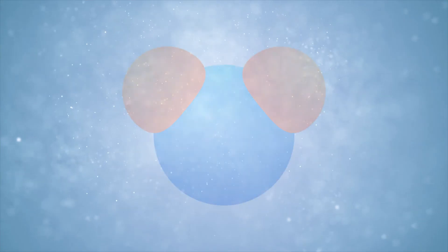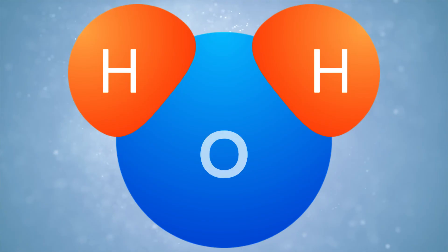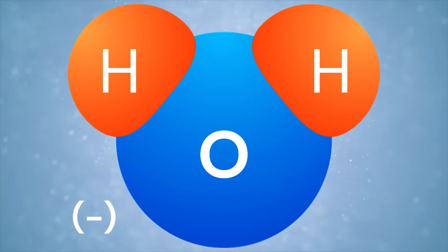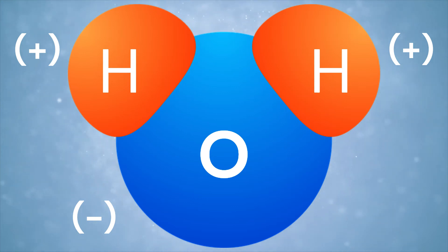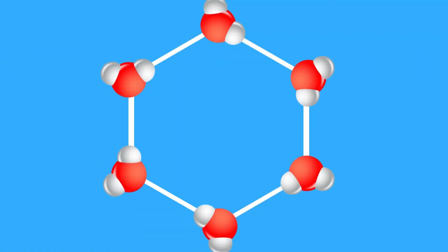Water is chemically predisposed to form hexagonal patterns under certain weather conditions. A water molecule has two hydrogen atoms and one oxygen atom. These atoms have unequal electron density, because the oxygen atom is electronegative. The side with the oxygen is negatively charged, and the side with the hydrogens is positively charged. This means that the electrons in the water molecule spend more time on the oxygen side. So when two water molecules are pulled together, a new chemical bond is formed between these hydrogen and oxygen atoms — this is called hydrogen bonding.